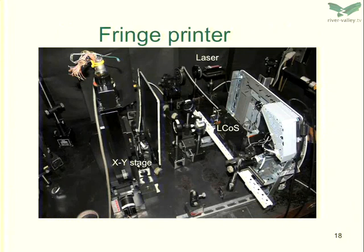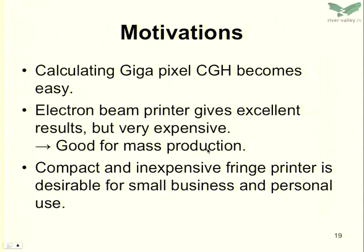Now I would talk about the fringe printer. This is a photograph of the fringe printer — it's very simple, with a laser, projector, X-Y stage, and some optics. The motivation is that today calculating gigapixel CGH is becoming easy, even with a personal computer. For mass production, an electron beam printer gives excellent results but is very expensive — good for mass production but not suitable for small business or personal use. A compact and inexpensive fringe printer is desirable for small business and personal use.